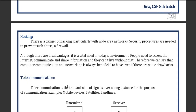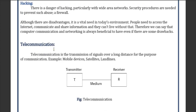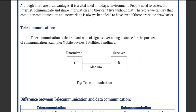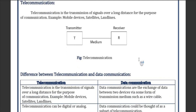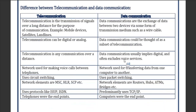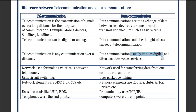Data can sometimes be hacked, which is a security concern. Telecommunication is the transmission of signals over a long distance for the purpose of communication — examples include mobile devices and landlines. The difference between telecommunication and data communication: telecommunication can be digital or analog, while data communication is a subset of telecommunication. Telecommunication is communication over a distance, whereas data communication usually implies digital and often excludes voice services.